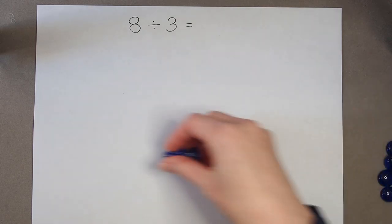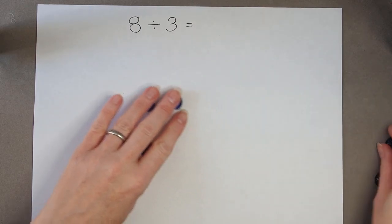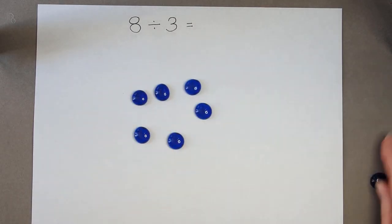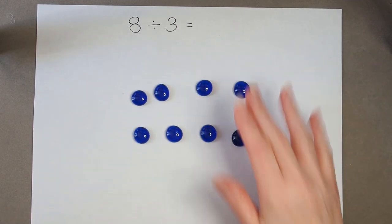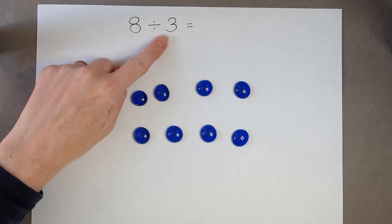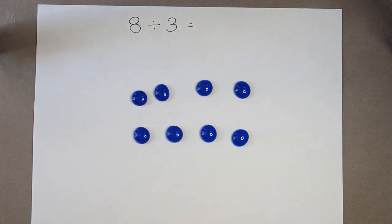So let's try that with some counters. I've got 8 counters, so divide by 3 tells me to split them either into 3 groups or into groups of 3. I'm going to split them into groups of 3.